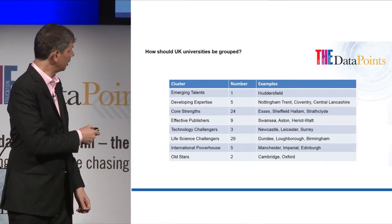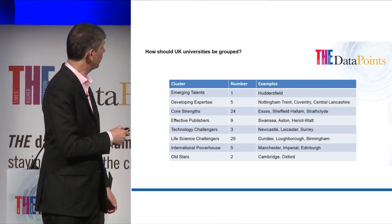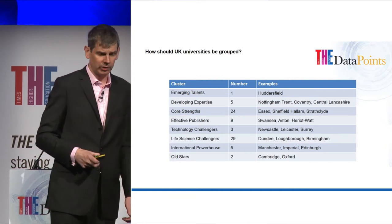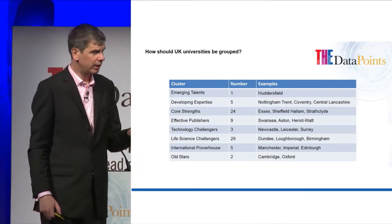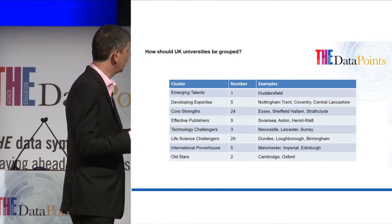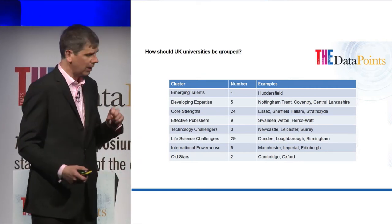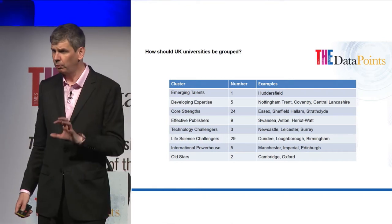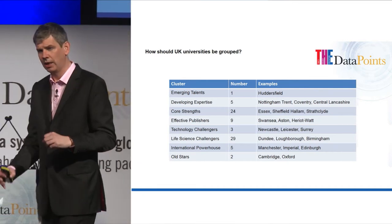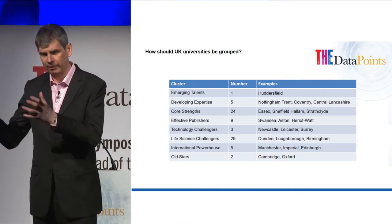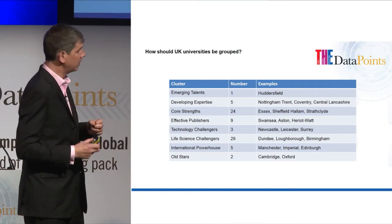The most traditional cluster — the 'old stars' — has seven institutions in it internationally, and contains Oxford and Cambridge. Sitting just below that we have three groups: international powerhouse, technologies challenges, and life science challenges. These are universities performing exceptionally well on the world stage but with particular focuses. Interestingly, Caltech — the top university in the world university rankings — sits in the international powerhouse group. The UK is very well distributed across these clusters.